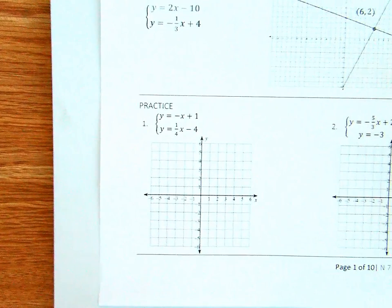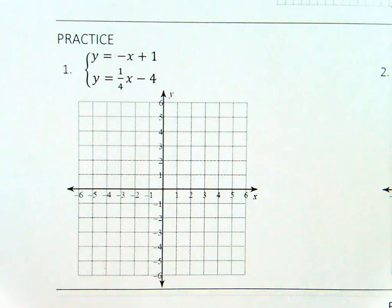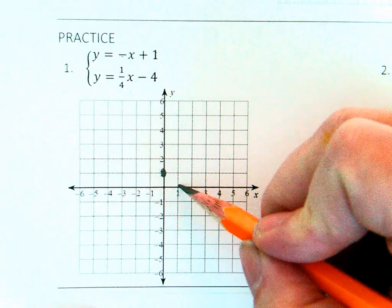One way to solve a system of two linear equations is to graph both lines. The point where the lines intersect, that means cross, is the solution.